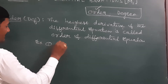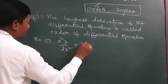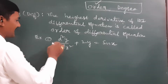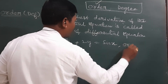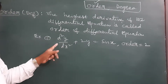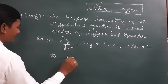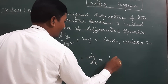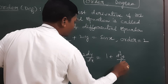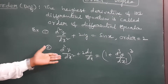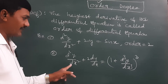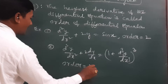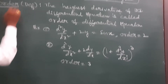Example 1: d²y/dx² + 2y = sin(x). Here only the second derivative exists, so the order is 2. Example 2: d²y/dx² + 2 dy/dx = 1 + (d³y/dx³)³. Here we have a first derivative, second derivative, and third derivative. The third derivative is the highest, therefore the order is 3.